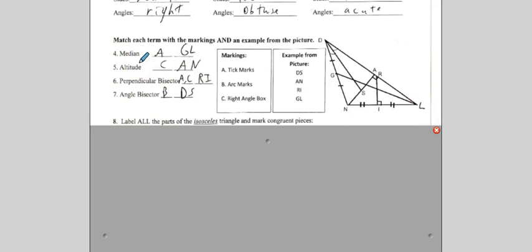Altitude. Now, remember, an altitude must also come from a vertex and have a 90-degree angle. So, therefore, we need a right-angle box. So the only right-angle boxes we have are right here and right here. Now, again, does this start at a vertex? No, it does not. Find this right angle. Does it start at a vertex? Yes, it is. A, N is an altitude.